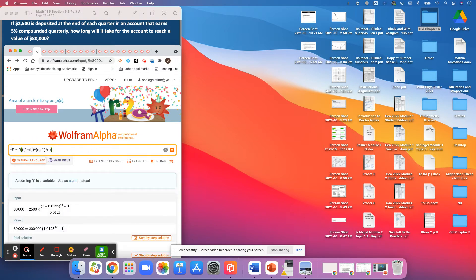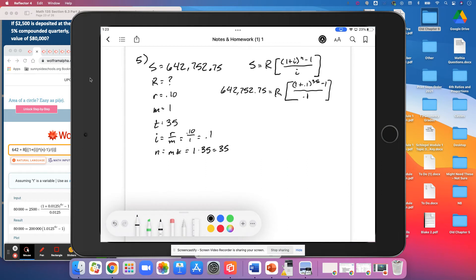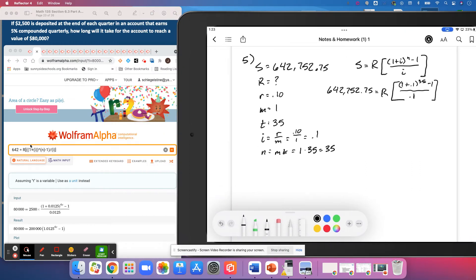So we can go ahead and swing this to Wolfram. And my iPad disappeared again. I don't know what's going on with that. I'll work on that in just a moment. We won't need it for this piece. Okay. So we have a total future value that we want of 642... Here's the iPad back. Let's get it out of my way. $642,752.75. The R is what we're looking for, and Wolfram won't like that. So we're going to use X. I is 0.1.